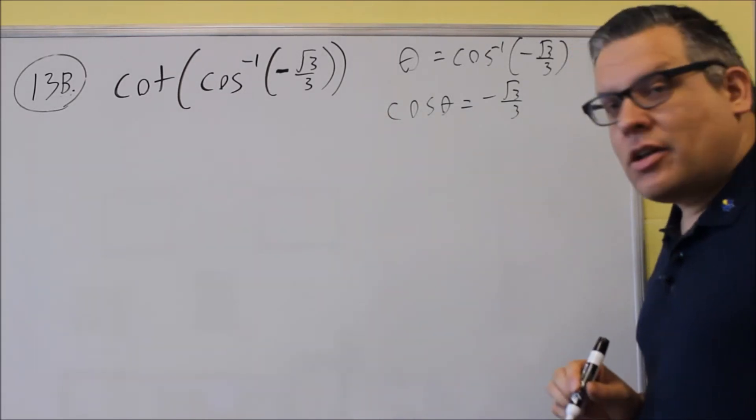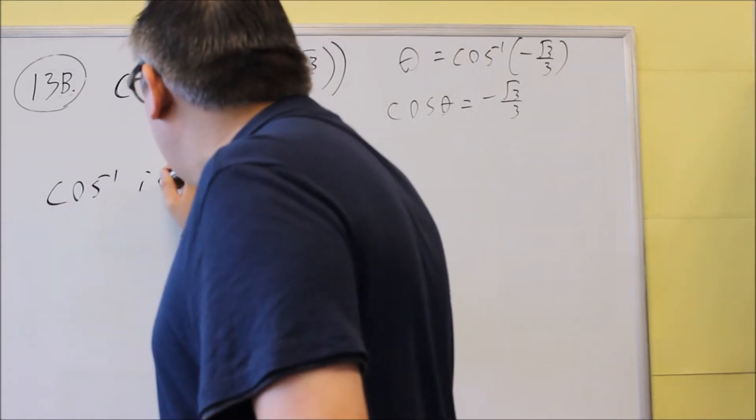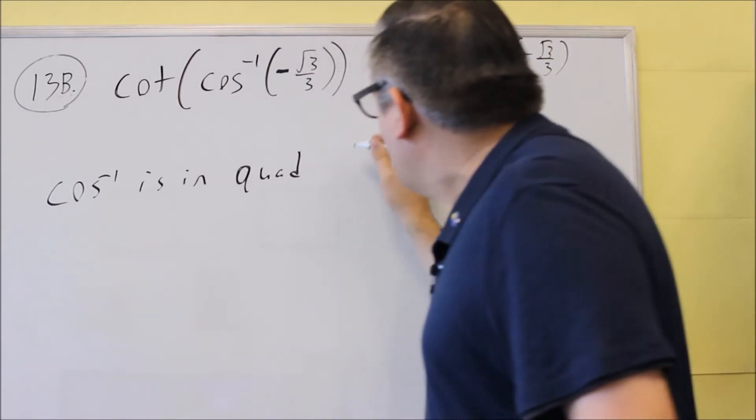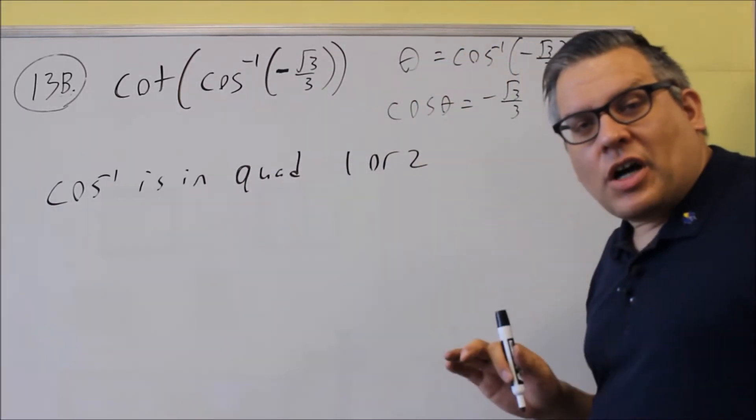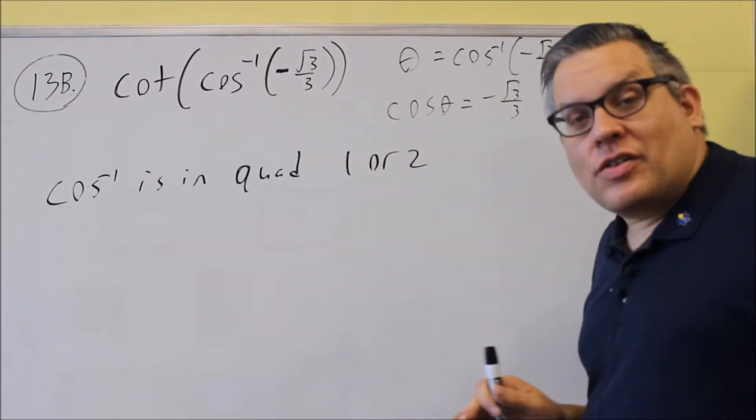Now, the inverse cosine is in quadrant 1 or 2. We talked about in this section that they end up in different quadrants depending on what you have on the inside.